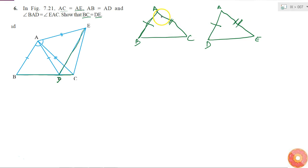If I can get that this angle is equal to this angle, then I can tell that these two triangles are congruent. How can I get that? I am given that angle BAD is equal to angle EAC.